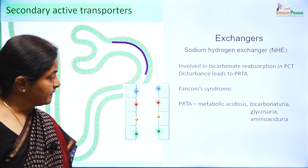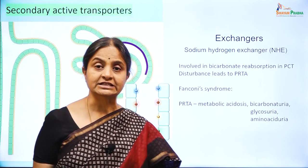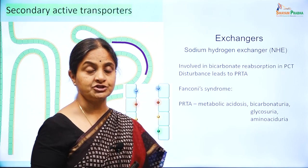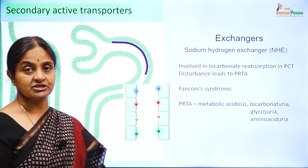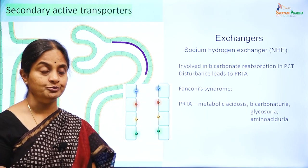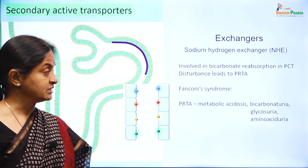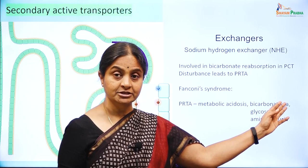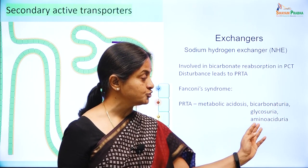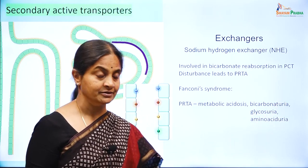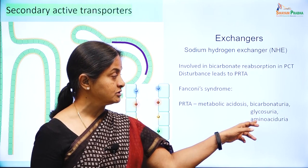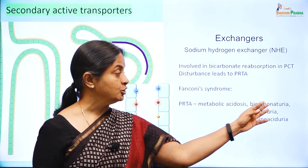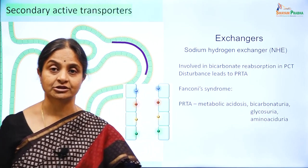There is a familial syndrome called Fanconi syndrome where these sodium-coupled transport processes in the proximal tubule are affected. Individuals have metabolic acidosis because they lose bicarbonate in the urine, along with glycosuria and amino aciduria. Normally glucose, amino acids, or bicarbonate are not found in urine, but in Fanconi syndrome all of them appear in the urine.